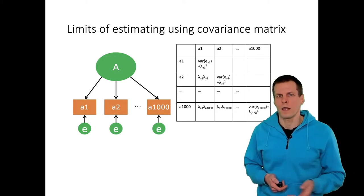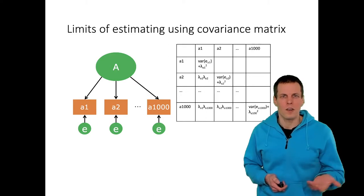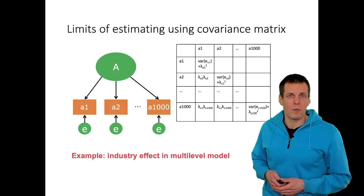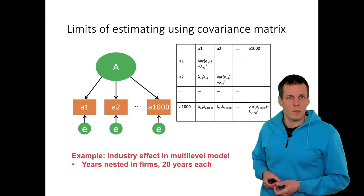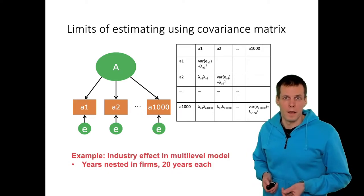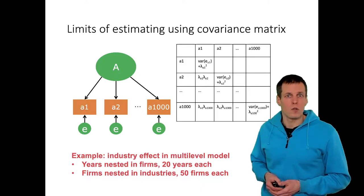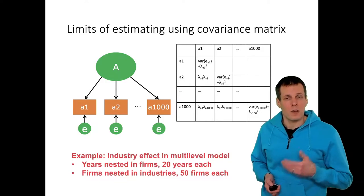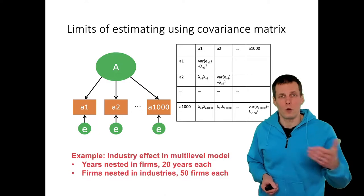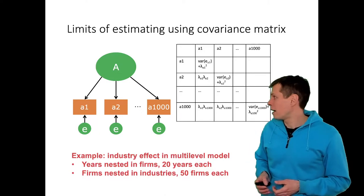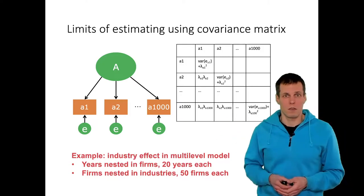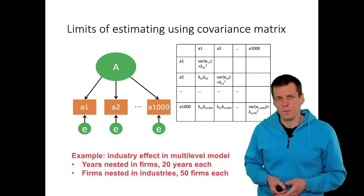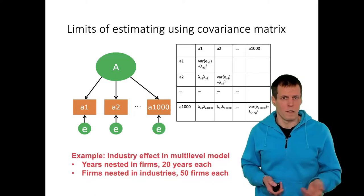This might sound like something you'd never face, but it's actually fairly common. Consider multi-level modeling with nested data. If you have industry effects with 20-year panels — 20 observations per company and 50 companies per industry — you'd have 1,000 observations in each industry. To estimate an unobserved industry effect as a latent variable, you'd need a huge correlation matrix of 1,000 by 1,000, which is not feasible because of matrix size.